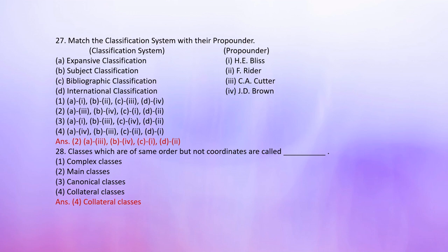Classes which are of the same order but not coordinates are called: 1. Complex classes, 2. Main classes, 3. Canonical classes, 4. Collateral classes. The correct answer is 4: Collateral classes.